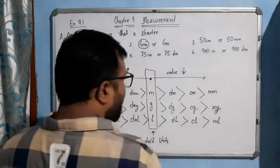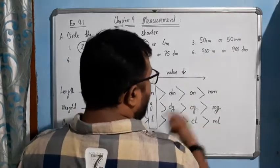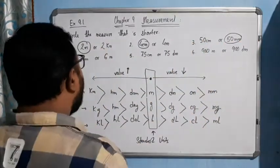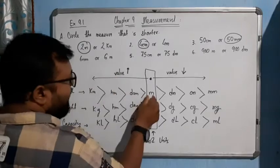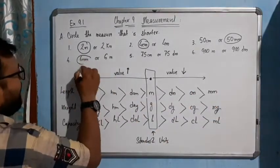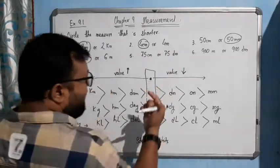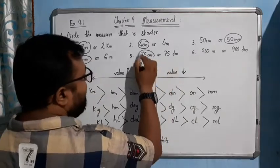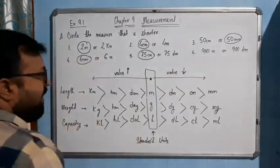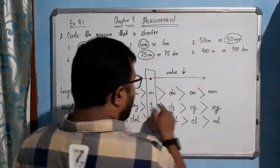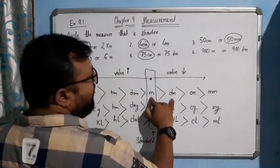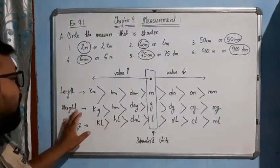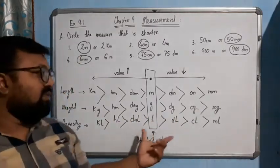For '50 centimeter and 50 millimeter,' millimeter is on the right-hand side of centimeter so millimeter is smaller — 50 millimeter is the answer. For '6 millimeter and 6 meter,' obviously millimeter is smaller than meter — 6 millimeter. For '75 centimeter and 7 decimeter,' centimeter is on the right-hand side of decimeter so centimeter is smaller. For '900 meter and 900 decimeter,' decimeter is smaller than meter — so 900 decimeter.